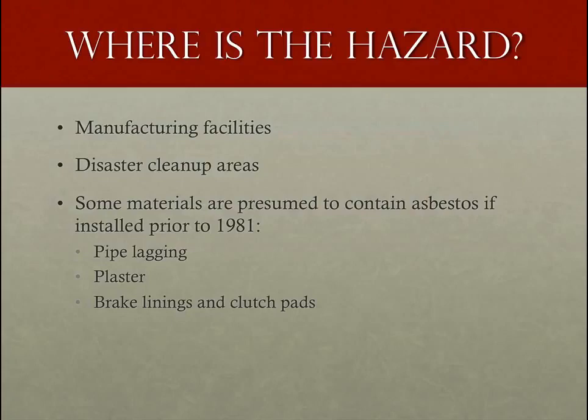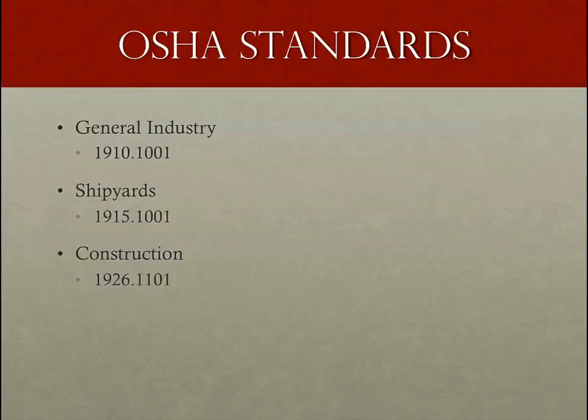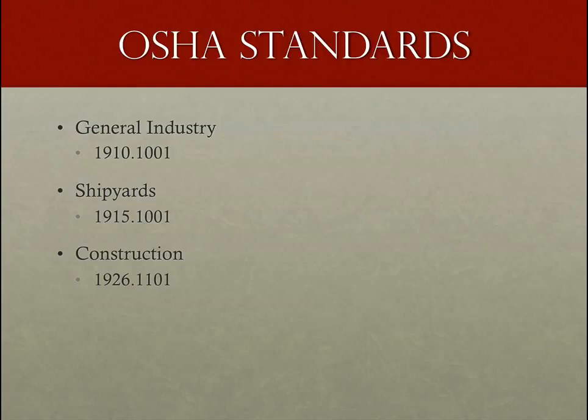Now let's talk about the three industries with OSHA standards on asbestos. They are general industry, shipyards, and construction. OSHA has three standards to protect workers from the hazards of asbestos depending on the type of workplace. For complete information on all of these requirements, reference the standard listed on your screen for each particular industry. I'm going to briefly go over each one of these three so you have a basic idea of the OSHA standards.